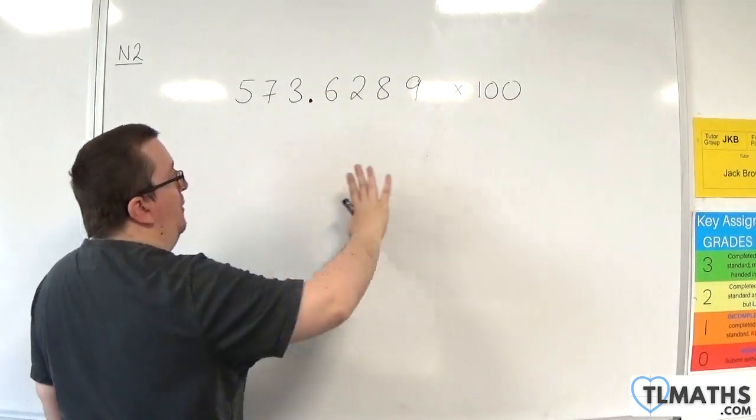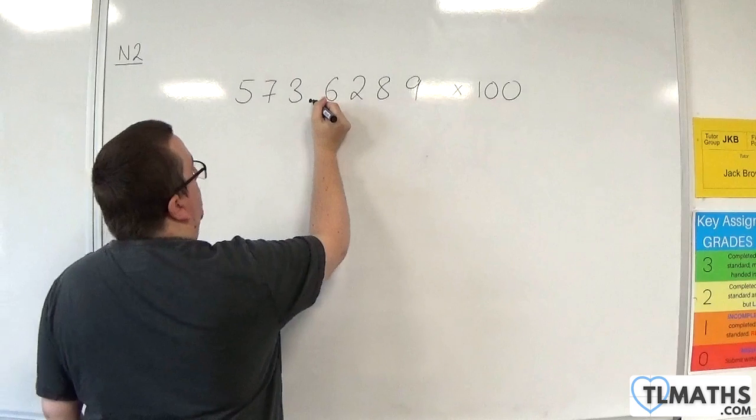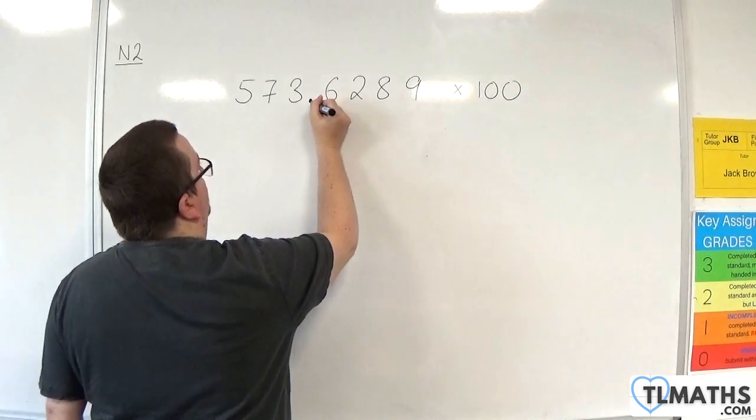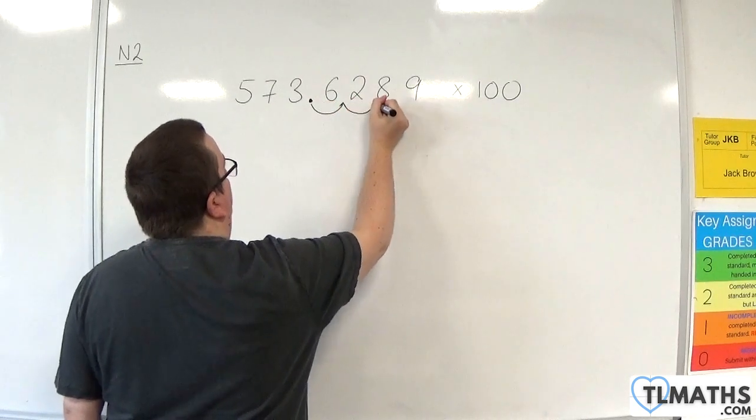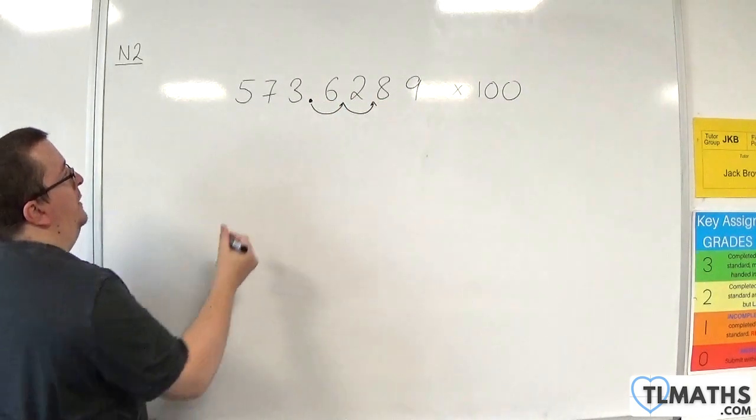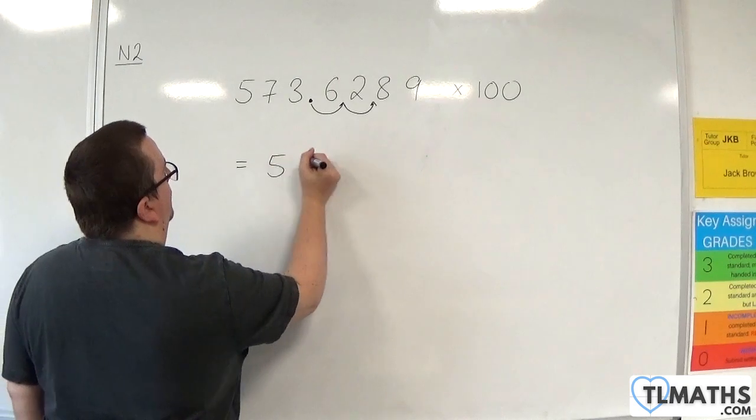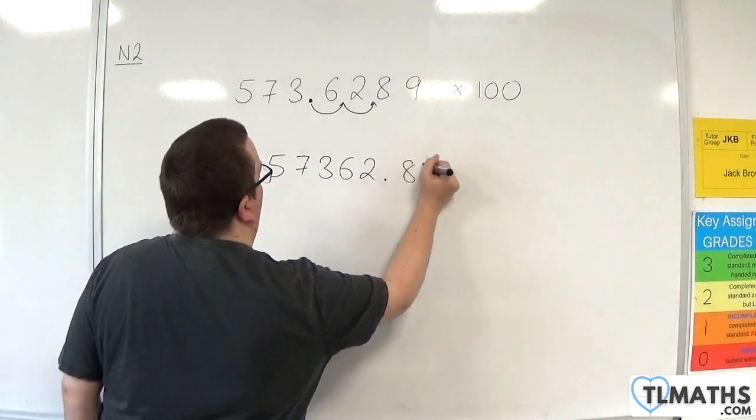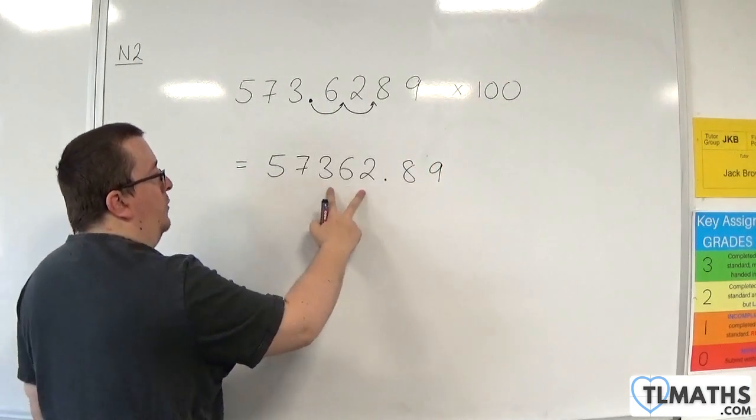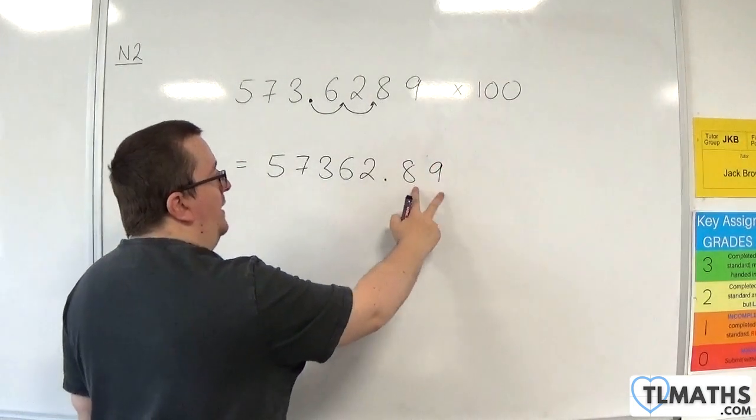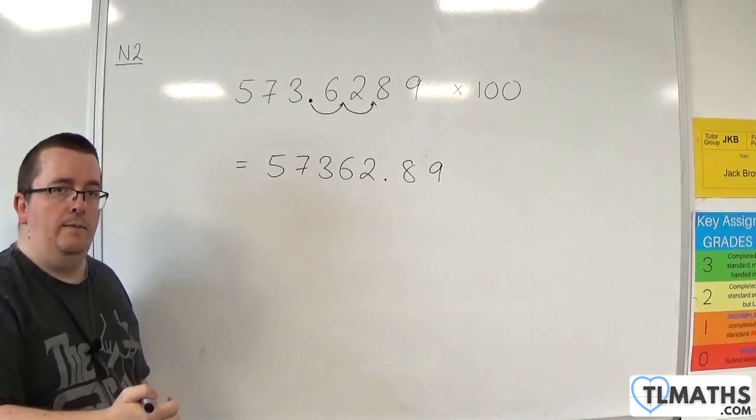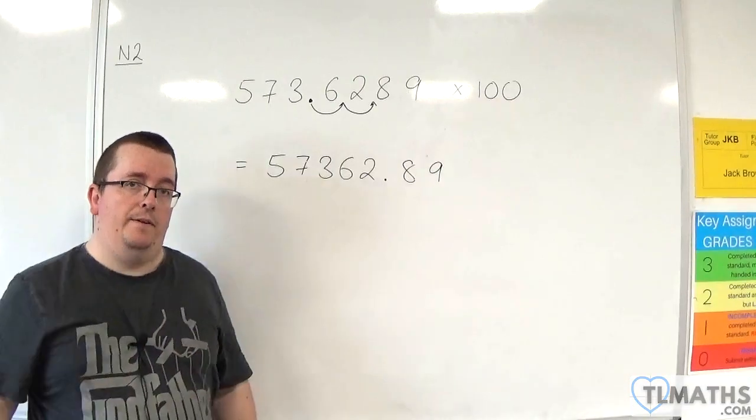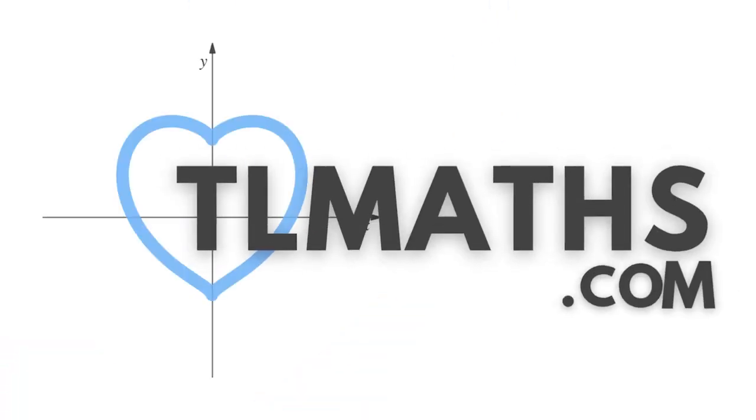When you're multiplying by powers of 10, it will move to the right. And because it's 100, it's got to move two steps to the right. And so our answer is 57,362.89. And that's how we can multiply by powers of 10.